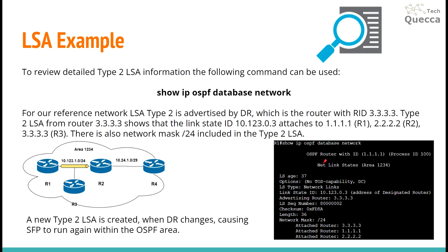For our example, we can see that we run this command on the router with ID 1111, process ID 100, net link states area 1234. Here we can see our designated router IP address on the link, the advertising router which is the router ID of our designated router, sequence number, checksum, network mask, and three routers which are connected to this segment: router 3, 1, and 2.